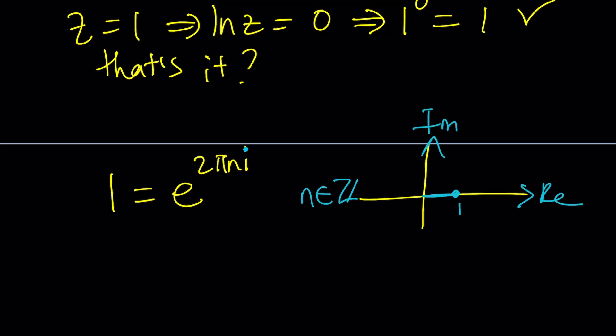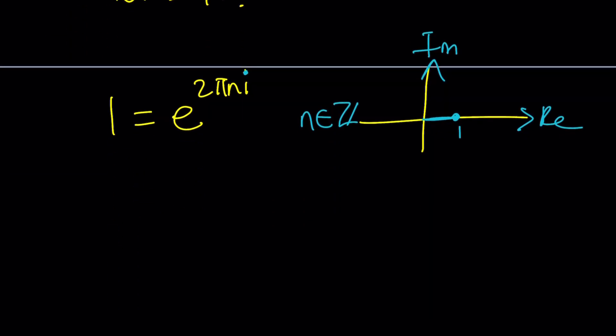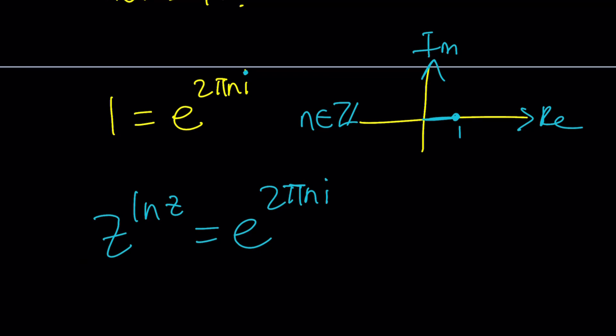Now here's what we're going to do. We're going to replace 1 with that and do a little bit of logarithms. So 1 equals e^(2πni), and I can write my equation as z to the power ln z equals e to the power 2πni. Do I have to use a generic integer like n? I could just use 2πi, but that would just be the particular solution. Obviously, there's going to be infinitely many solutions.